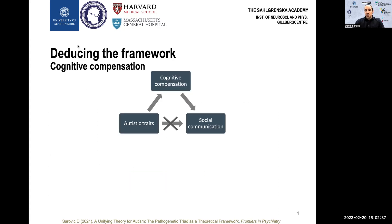We can use our intelligence and executive functions to overcome some of the issues that present from having pronounced personality traits. For example, individuals with pronounced autistic traits are more likely to experience difficulties with social communication. But through conscious and unconscious cognitive mechanisms, one can learn social protocol and improve the perceived social ability, even though the underlying cognitive mechanisms during the interaction of course differ.